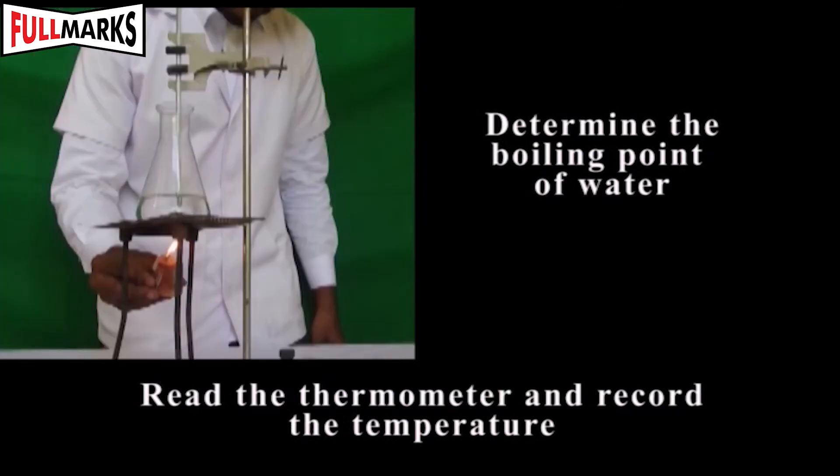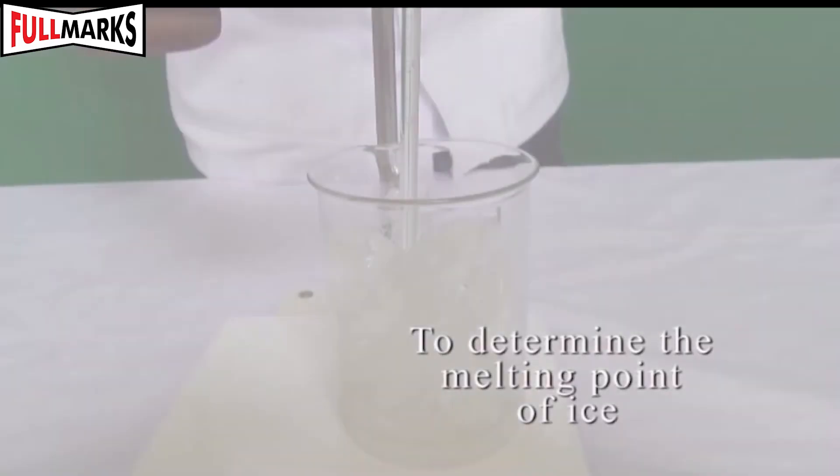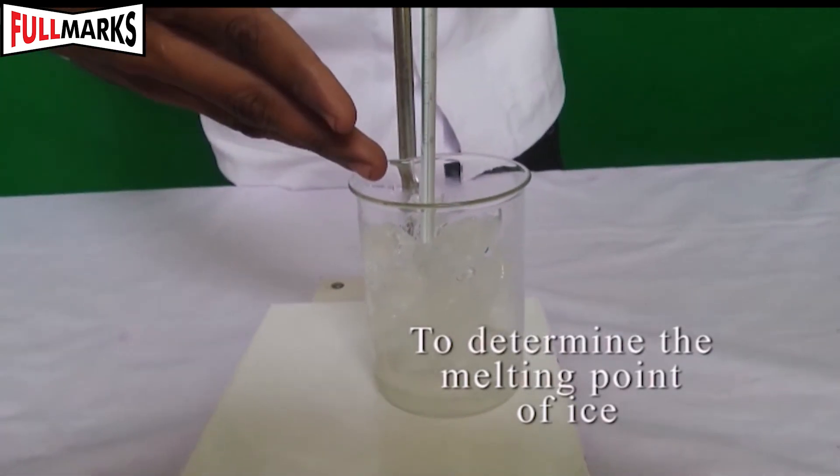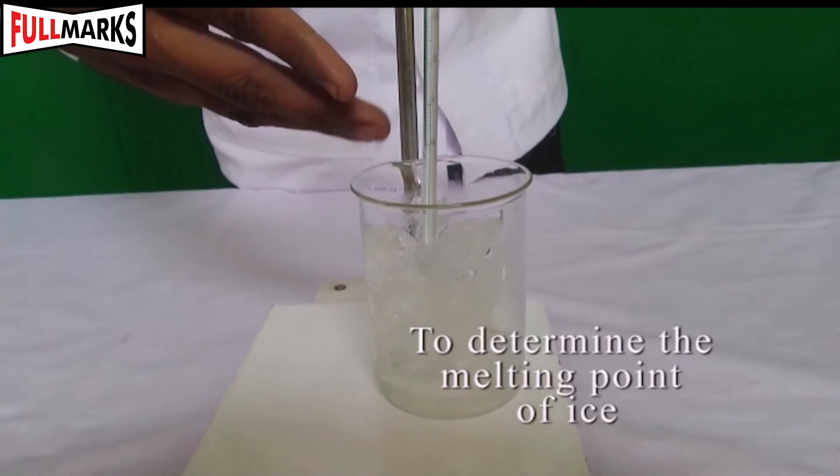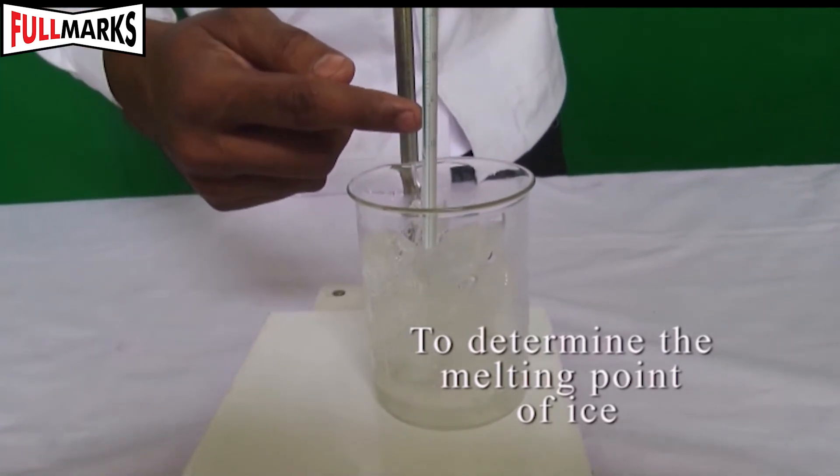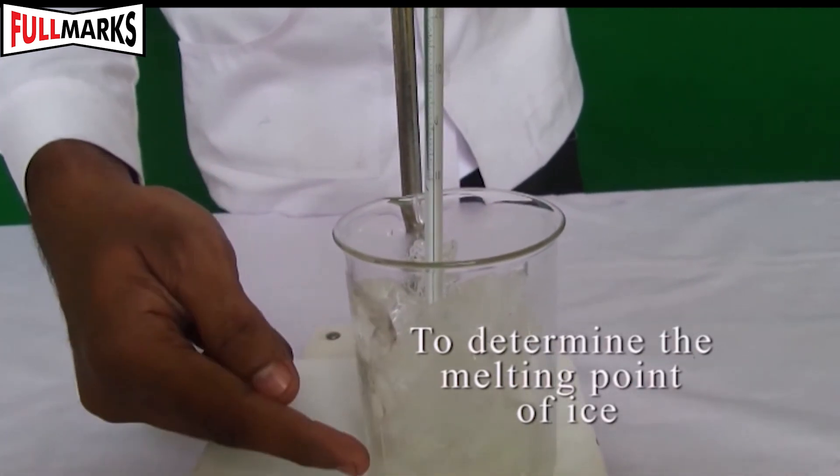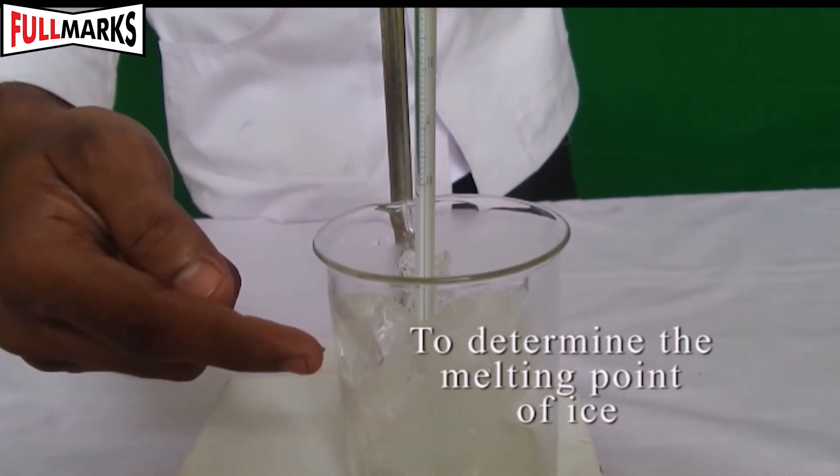To determine the melting point of ice, take a beaker half filled with dry crushed ice obtained from distilled water. Suspend the Celsius thermometer so that the bulb is completely surrounded by ice.